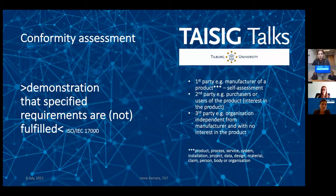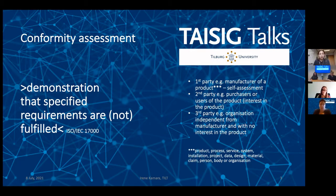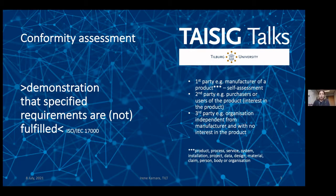Conformity assessment is, to put it simply, a demonstration that specified requirements are fulfilled or not. We need an object to be assessed — this could be a product, a process, a system, a service, an organization, or a combination of those. We need pre-specified requirements, which can be found in technical standards like ISO, the ENs from CEN and CENELEC, or ETSI — the European standards organizations — or the requirements can also be found in legislation.